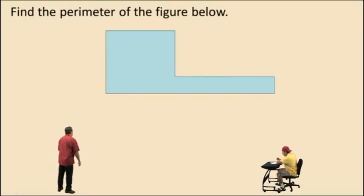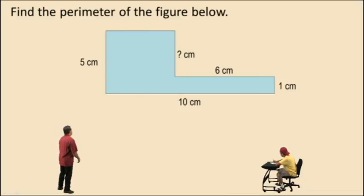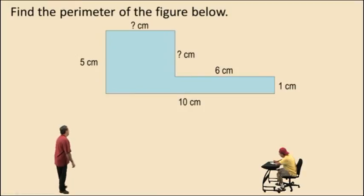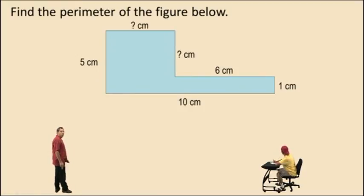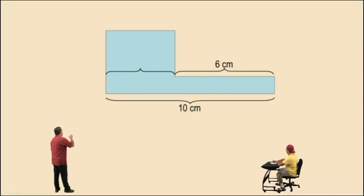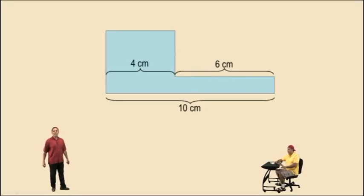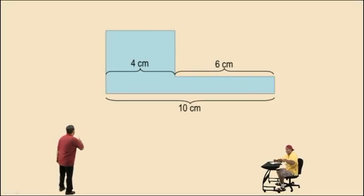Find the perimeter of the figure below. Notice we have two missing side lengths — one is vertical and one is horizontal. So let's go ahead and find the missing horizontal length. Notice here, Charlie, the bottom is 10 and that first step is 6 centimeters. Now let's bring that missing length down. If this is 10 on the bottom and that first step is 6, what's the missing side length? 4. Very nice there, Charlie. Very good. So let's put that back on top.